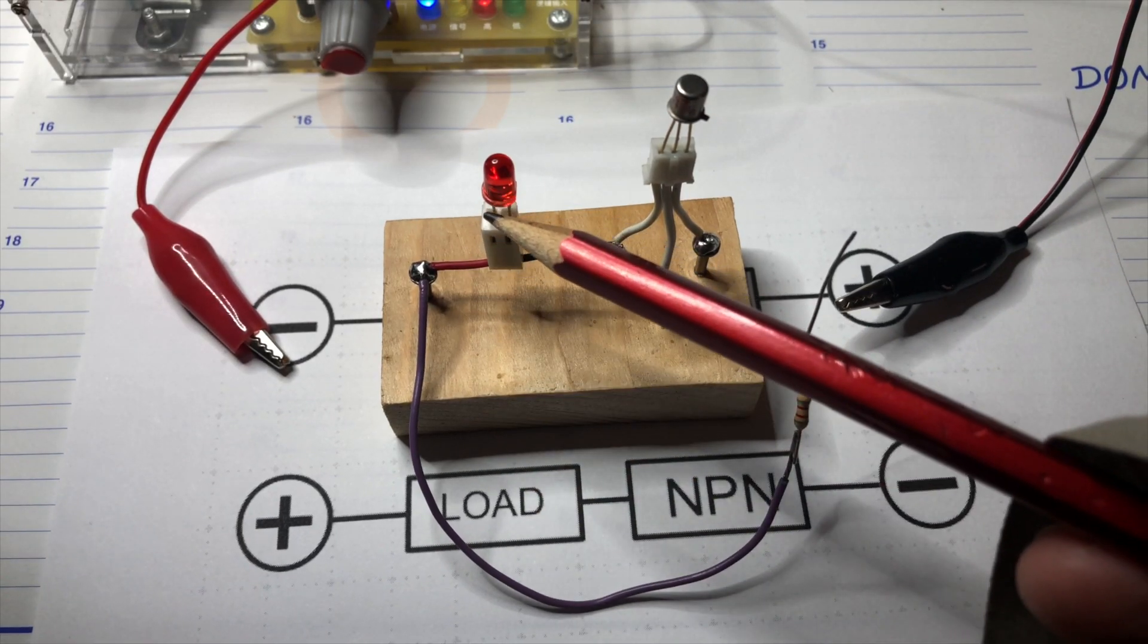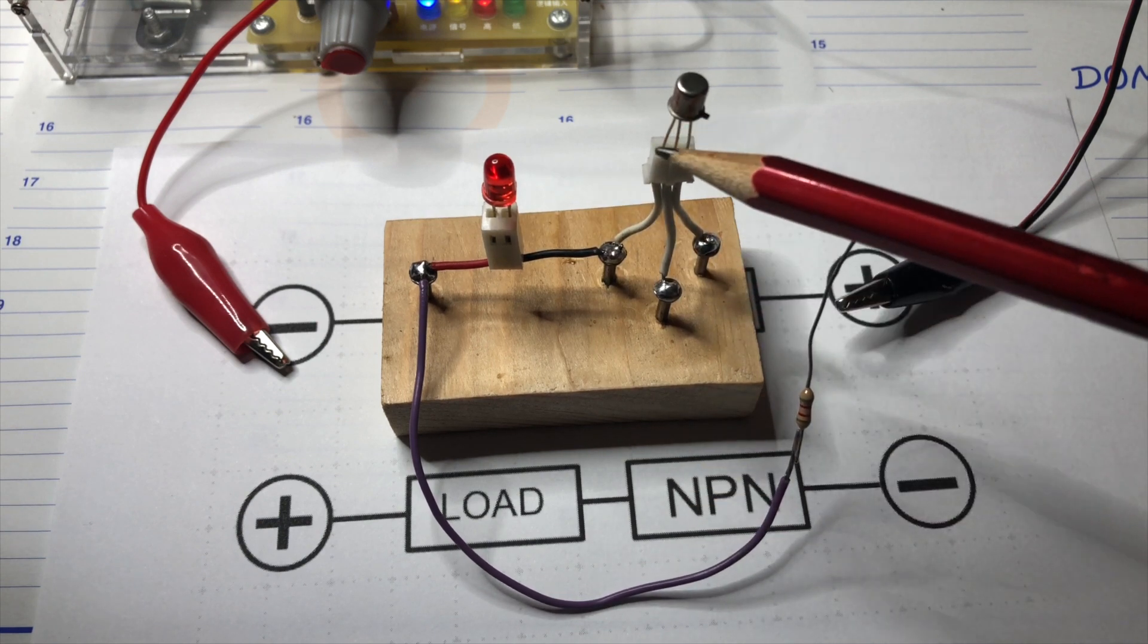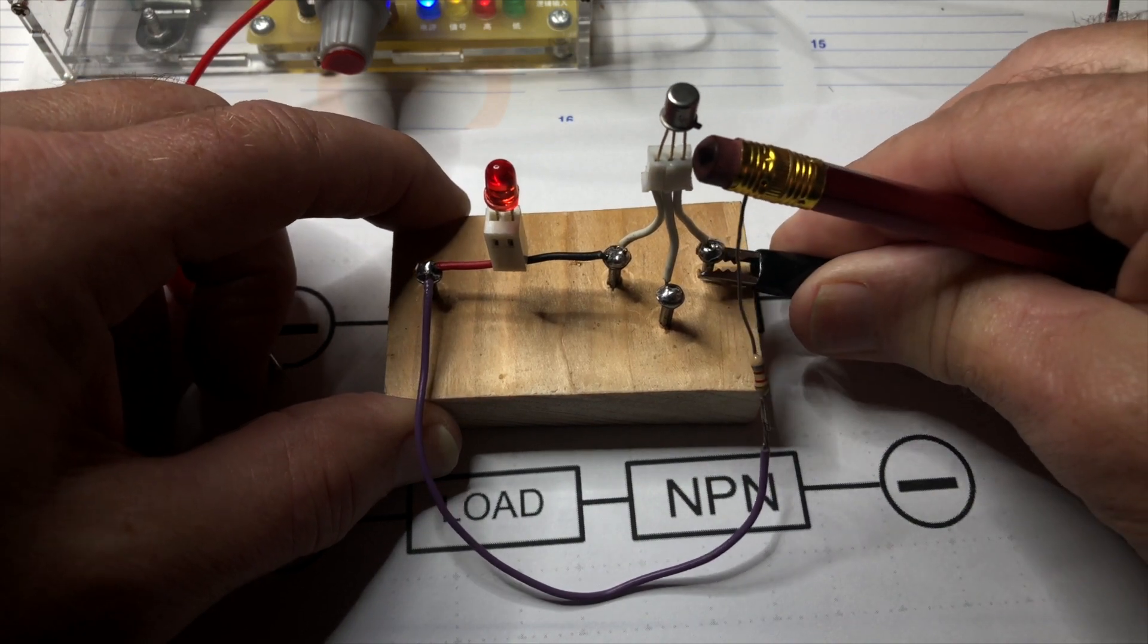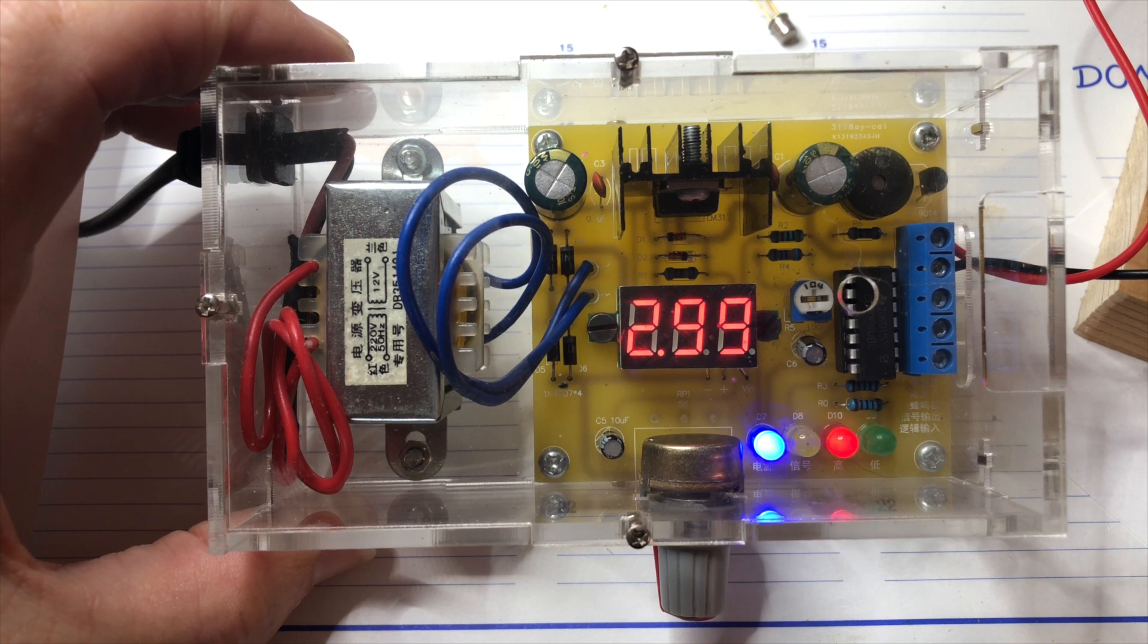Here I have connected the load, which is the LED, in the forward position and an NPN transistor. The voltage is around 3 volts.